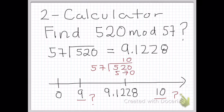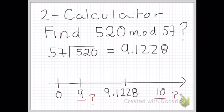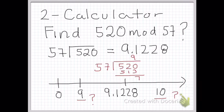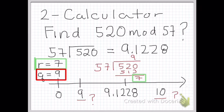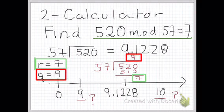We try 10: 57 goes into 520 ten times, but 10 times 57 equals 570, so that can't be right — 57 does not go into 520 ten times. So we choose 9. 57 goes into 520 nine times. 9 times 57 equals 513, and we get a remainder of 7. So our remainder r equals 7 and our quotient q equals 9.